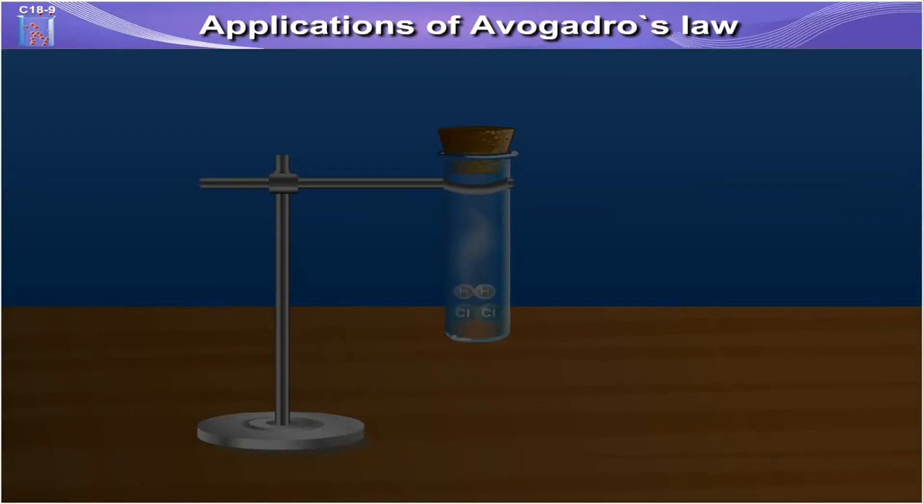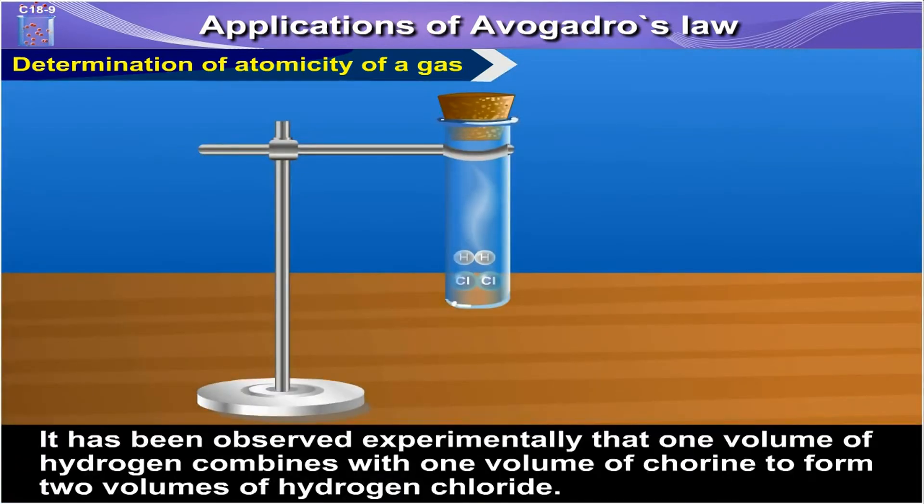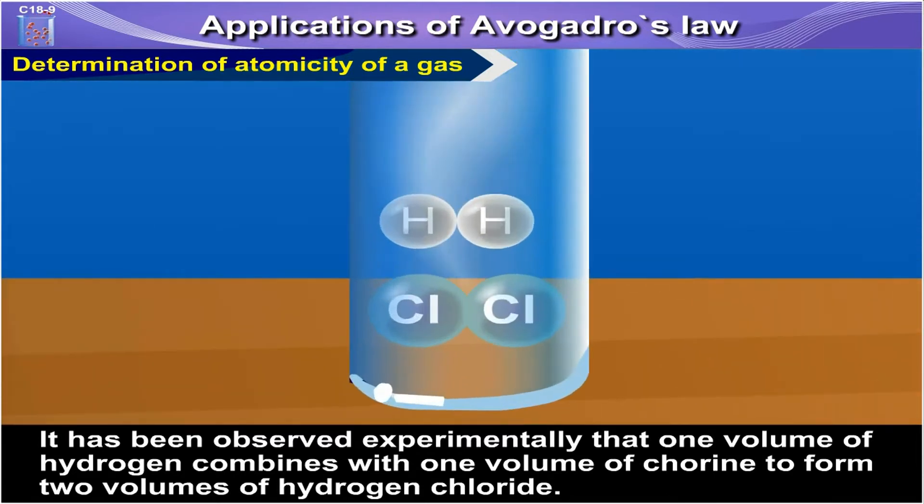Application of Avogadro's Law in the Determination of Atomicity of Hydrogen and Chlorine. It has been observed experimentally that one volume of hydrogen combines with one volume of chlorine to form two volumes of hydrogen chloride.